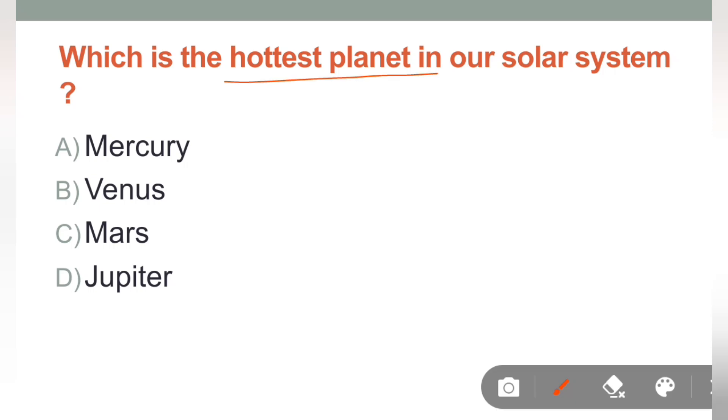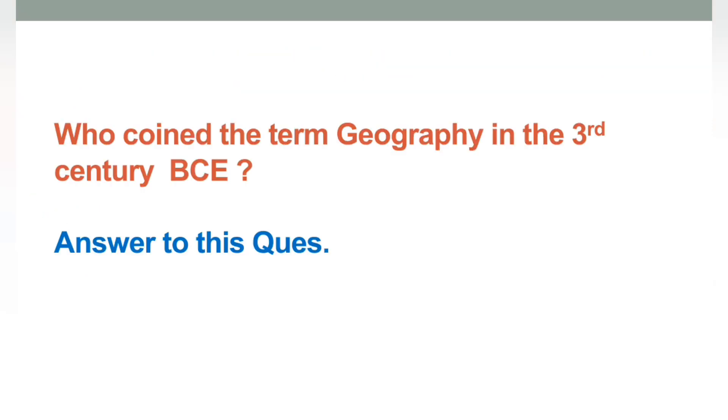Next is, which is the hottest planet of our solar system, that is Venus. Ab ye aapko comment mein batana hai, in mein se kaun se scientist ka naam hai, jis ne geography term diya tha in the third century BC. So, please let me know in the comment box. Thank you so much for watching this video. Have a great day.